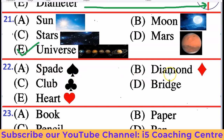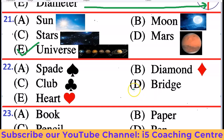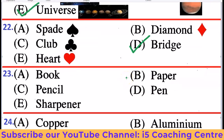Next: Spade, Diamond, Club, Bridge, Heart. Spade, Diamond, Club, and Heart are playing cards — suits in a deck. But Bridge is a game played with cards. So Bridge is the odd one out.